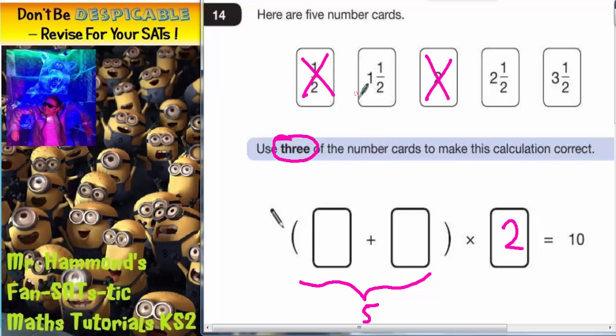Two and a half and one and a half, well two and one makes three and the two halves together would make four. So it can't be those two together.